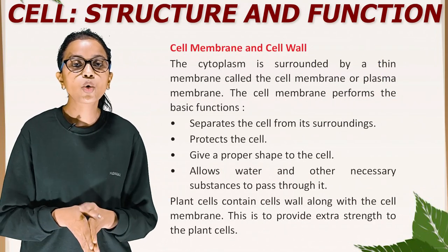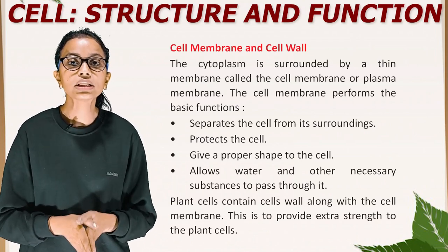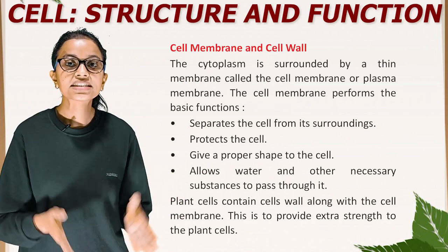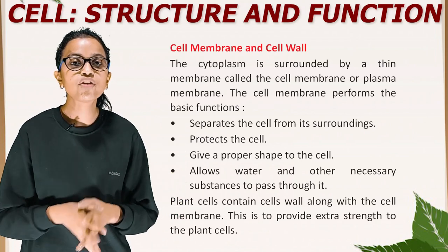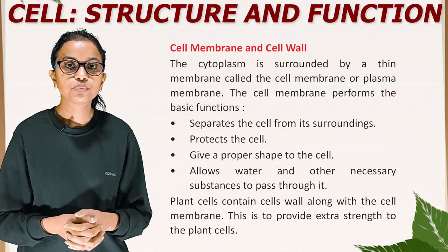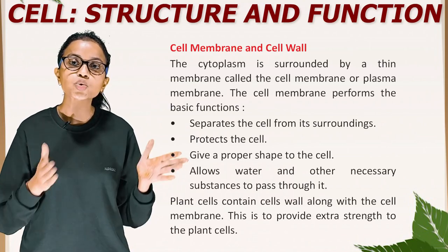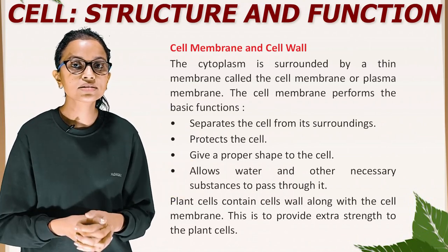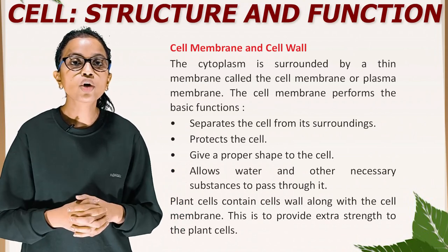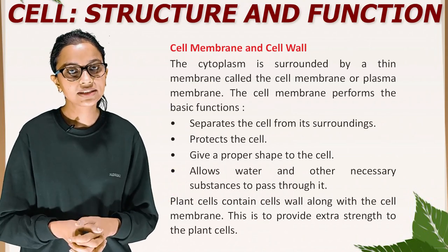Cell membrane and cell wall. The cytoplasm is surrounded by a thin membrane called the cell membrane or plasma membrane. The cell membrane performs basic functions: it separates the cell from its surroundings, protects the cell, gives a proper shape to the cell, and allows water and other necessary substances to pass through it. Plant cells contain a cell wall along with the cell membrane, to provide extra strength to the plant cell.